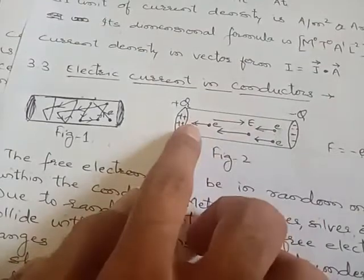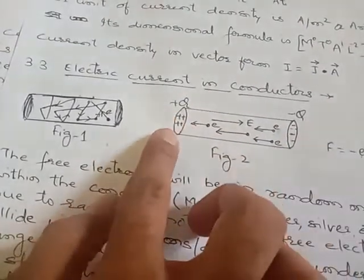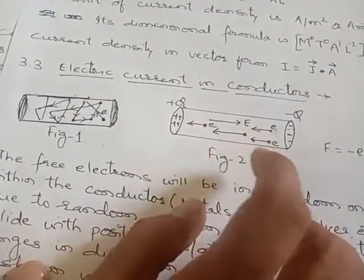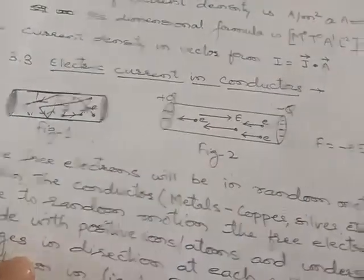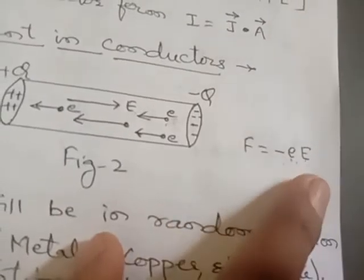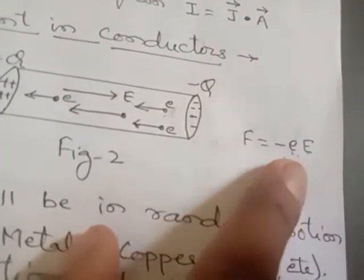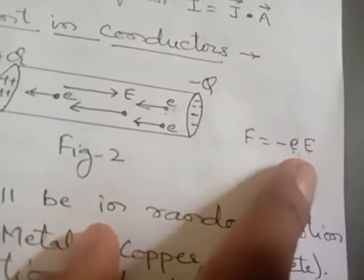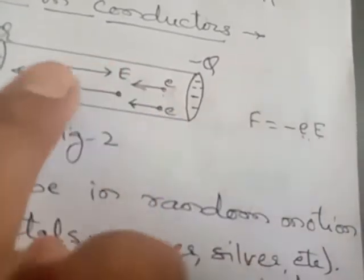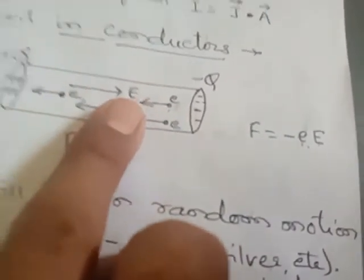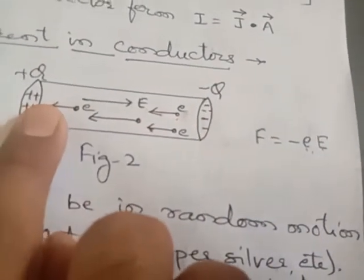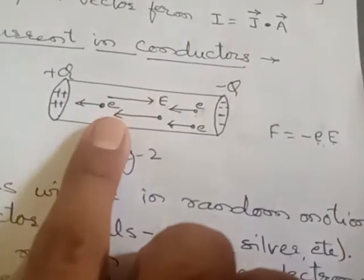The force created on the electrons by the electric field is F = −eE, where F is the force and e is the charge. This much force is applied on the electron because of the electric field set up, and when the electric field is set up the electron starts moving from the negative terminal towards the positive terminal.